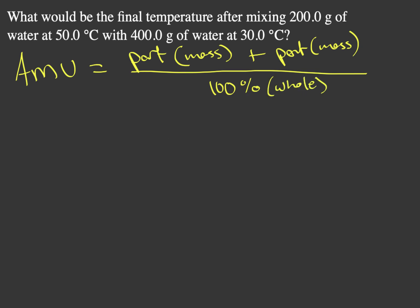This is a very similar situation. If we want our temperature, which is an average temperature because these mix together, we have our first part, which is 200 grams, times our temperature, which is 50 degrees, plus we have our second mass, which is 400 grams, times our second temperature, which is 30 degrees, and that's all over the whole, and our whole is 600 grams worth of water. And if we figure that out, we get 36.67 degrees Celsius.